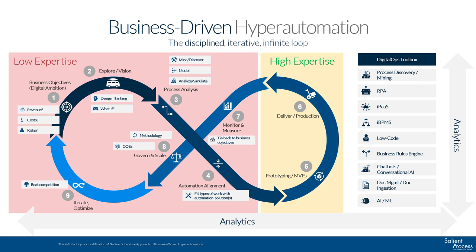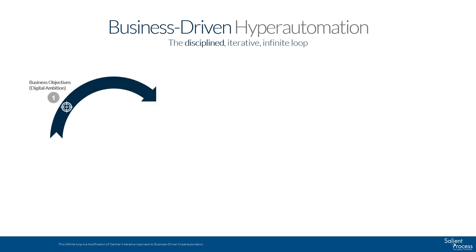The first step is to define your business objectives. What are you after? What needs to change? Are you trying to chase growth and thus revenue needs to increase? Are you trying to boost profitability? Do your costs need to go down? Is compliance a big driver for your company? When you start with the business objective, this will drive what your digital ambition ends up being. This makes sure you don't lose the forest for the trees — it is always about the business objectives you are trying to achieve. Technologies and methodologies are just there to help. They are not the end game.